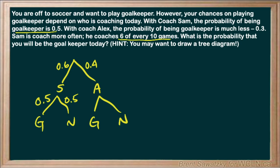Now, with coach Alex, the probability of being a goalkeeper would be 0.3, which means there would be a 0.7 chance that you would not be the goalkeeper. So now we've got our situation all nicely organized.